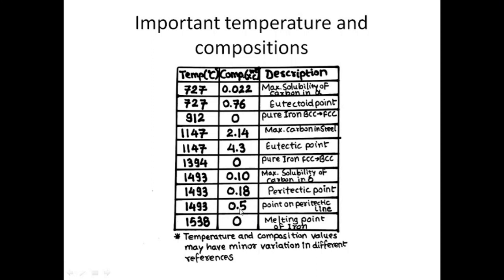The 0.5 weight percentage carbon point is the end point of the peritectic line. At 1538 degrees Celsius, we have the melting point of pure iron.